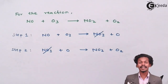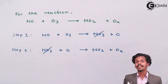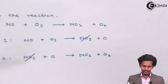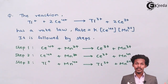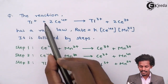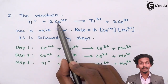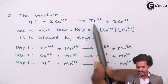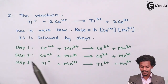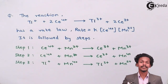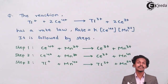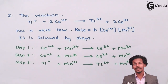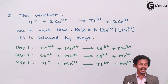Now that we understand reaction intermediates, let me give you a question. The reaction is: tellurium(2+) plus 2 cerium(4+) gives tellurium(3+) plus 2 cerium(3+), with a given rate law, followed by three mechanistic steps. We need to identify which species is the catalyst, which is the reaction intermediate, and what the rate determining step is.